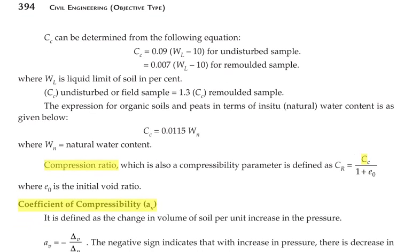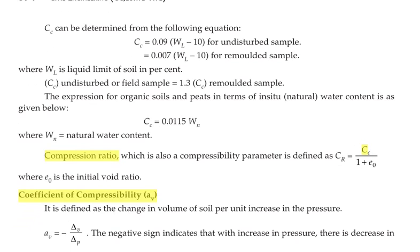CC can also be determined from empirical equations. For undisturbed soil sample: CC = 0.009(WL − 10). For remolded sample: CC = 0.007(WL − 10), where WL is the liquid limit of the soil in percentage. The compression index for undisturbed or field sample equals 1.3 times CC of the remolded sample. For organic soils and peats in terms of in-situ water content: CC = 0.0115 WN, where WN is the natural water content.